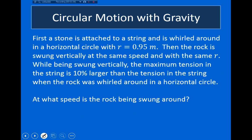Now I want to consider an example. A rock is attached to a string and whirled around in a horizontal circle with a radius of 0.95 meters. Then the rock is swung vertically at the same speed with the same radius. When the rock is being swung in the vertical loop, its maximum tension is 10% larger than the tension in the string when the rock was whirled in the horizontal circle. The question is: how fast is the rock being swung for the maximum tension in the vertical loop to be 10% larger than the tension in the horizontal string?